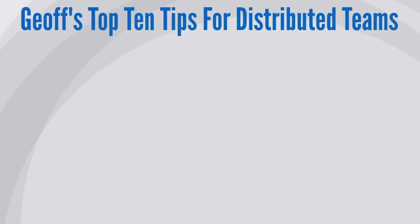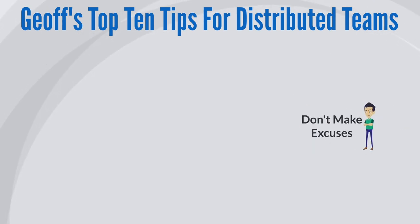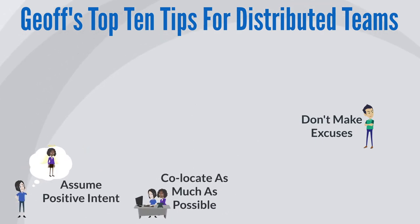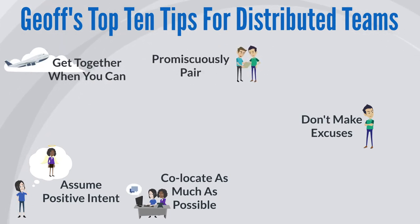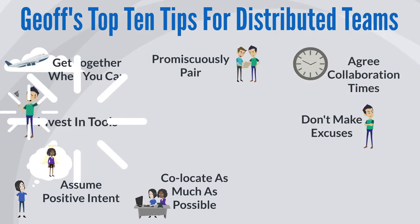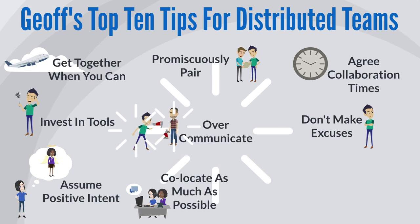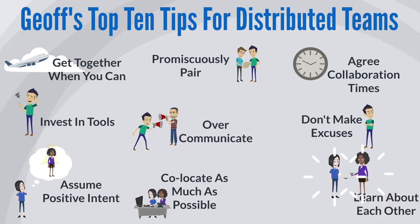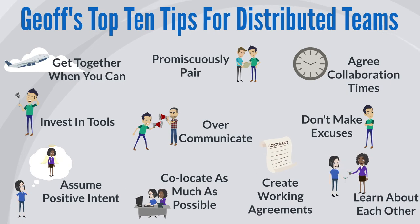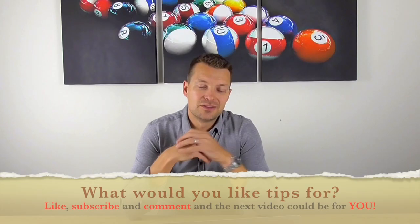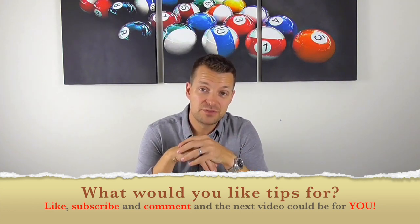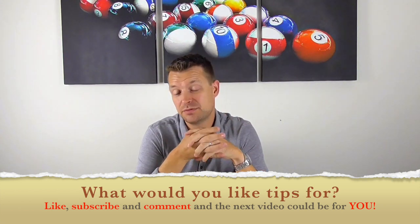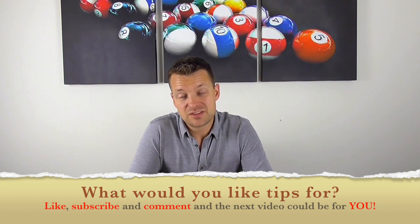A quick summary of the top 10 tips: don't use distribution as an excuse; co-locate as much as you can; assume positive intent; get everyone together when possible; promiscuously pair around reviews; agree specific collaboration times; invest in tools; over-communicate decisions and standards; learn about each other; and draft working agreements. That's the end of this Top 10 Tips video on distributed agile teams — the first person to like and comment can pick the next topic. I hope you found it useful, and until next time, take care.